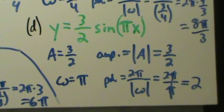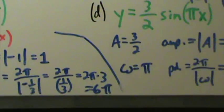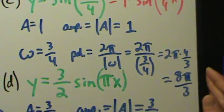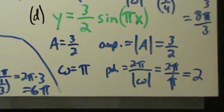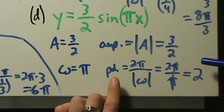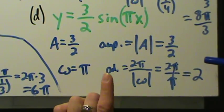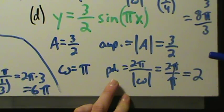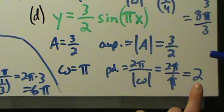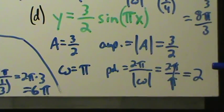All the previous periods had a π in them — π/4, 6π, 8π/3 — but this one does not. That can totally happen; the only restriction is that the period be a positive number. It doesn't have to contain π. So the period is 2, and the amplitude is three-halves. That's four more quick examples of finding amplitude and period.